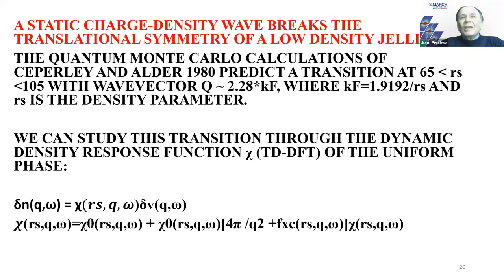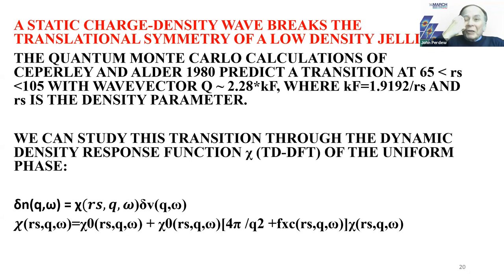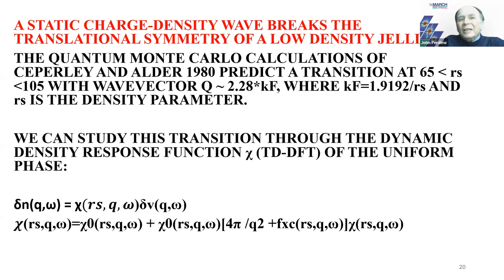My first example is the static charge density wave in a low-density electron gas. Quantum Monte Carlo calculations by Ceperley and Alder in 1980 predicted a transition at an r_s between 65 and 100 — lower than the densities in real metals. This charge density wave has a wave vector of about 2.28 times the Fermi wave vector, roughly the first reciprocal lattice vector of a BCC crystal, so it's the precursor of the Wigner crystallization that occurs at extremely low density. We can study this transition using the dynamic density response function χ of the uniform phase, and this is where for the first time in my talk we enter time-dependent density functional theory.